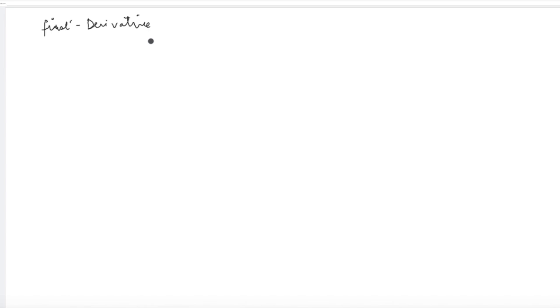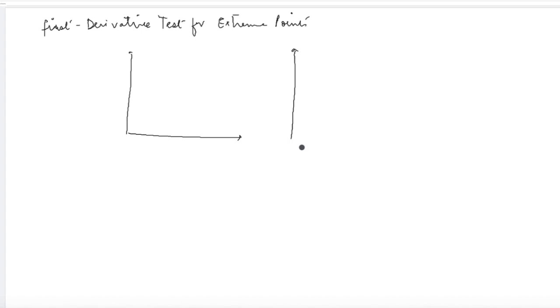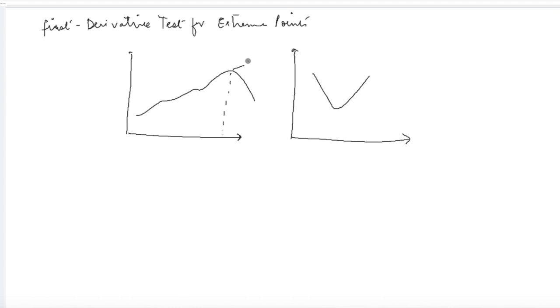Now let's look at the first derivative test for extreme points — how can we identify extreme points for a given function using the first derivative. I am plotting two functions. You can easily notice that one point in the first function appears to be a maximum point, and a particular point in the second function appears to be a minimum point. Suppose f(x) is differentiable in interval I and has only one stationary point.